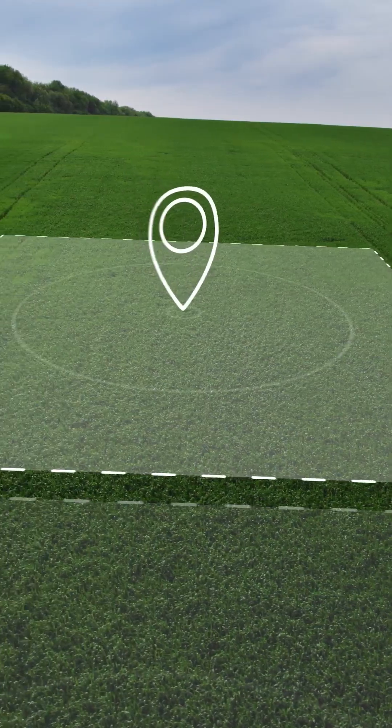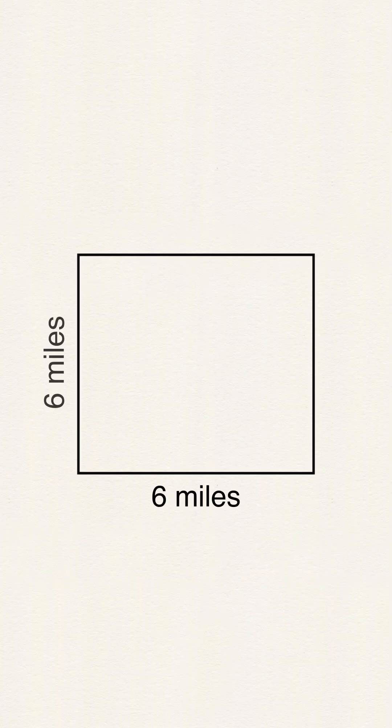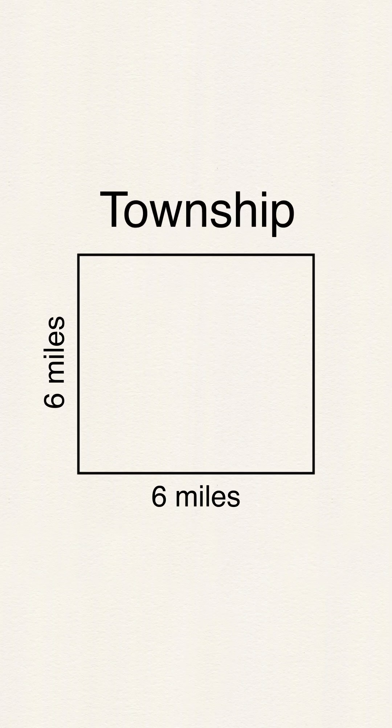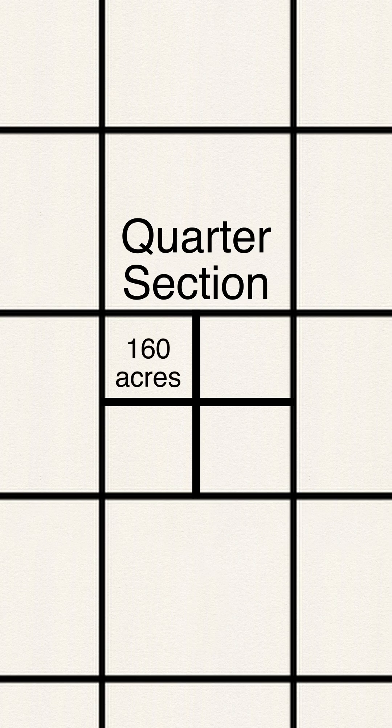It is essentially a giant grid, like in Sim City or Age of Empires. Each grid cell is six miles by six miles, called a township. Within each township, there are 36 sections that are a mile by a mile each. As you can imagine, each section is really large still, with 640 acres, so many places will break down the sections into quarter sections. Each quarter section still has 160 acres.